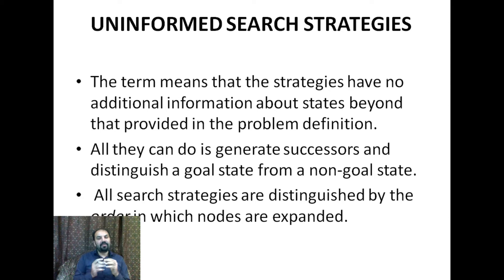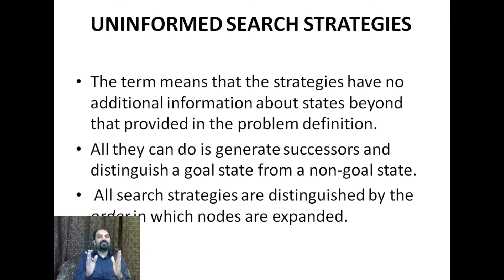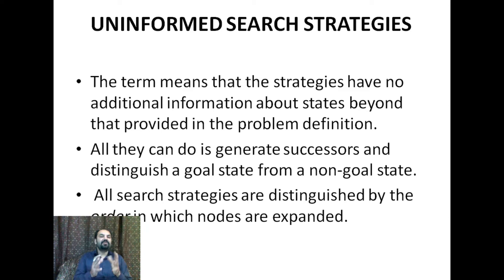Uninformed search strategies are strategies that do not have any additional information beyond what is available in the problem definition. These are also called blind search strategies. They generate successors and distinguish between goal states and non-goal states, differentiated by the order in which the search is performed.